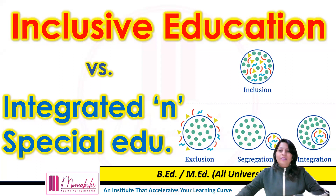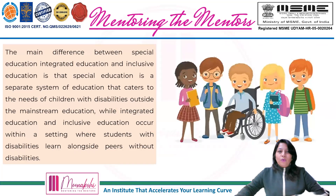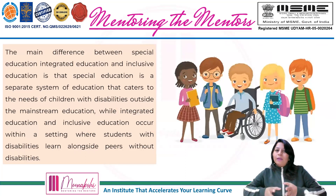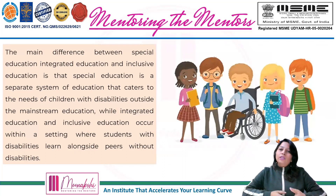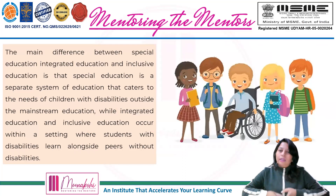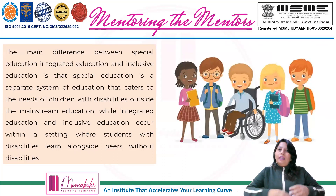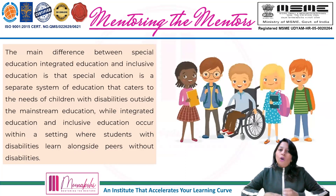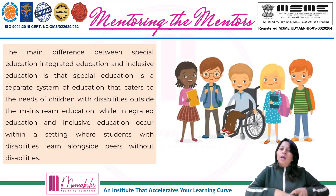So here you go, my dear educators. First of all, we should know the main difference between special education, integrated education, and inclusive education is that special education is a separate system of education that caters to the needs of the children with disabilities outside the mainstream education, where routine, normal, without-disabilities kids are taught in normal schools. They make special schools, make their needs and requirements accordingly, and teach them in those schools. So they have special schools — they have been excluded from normal schooling.